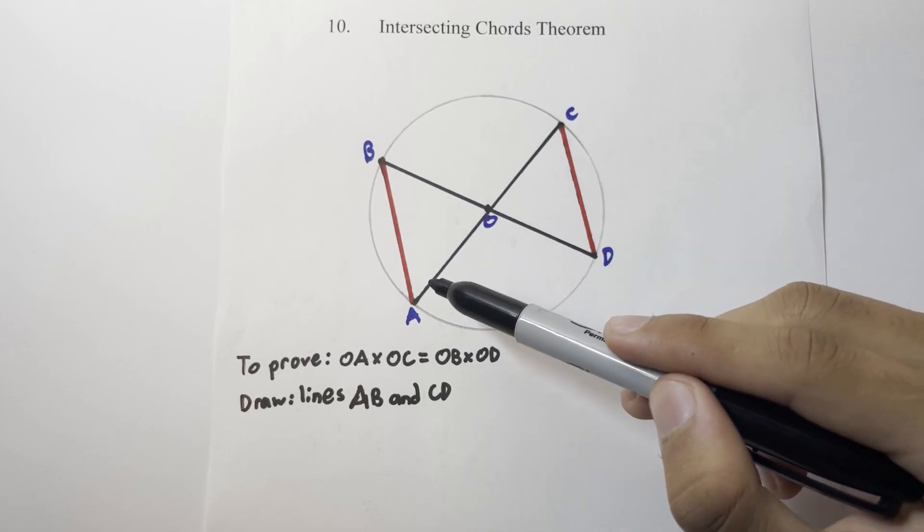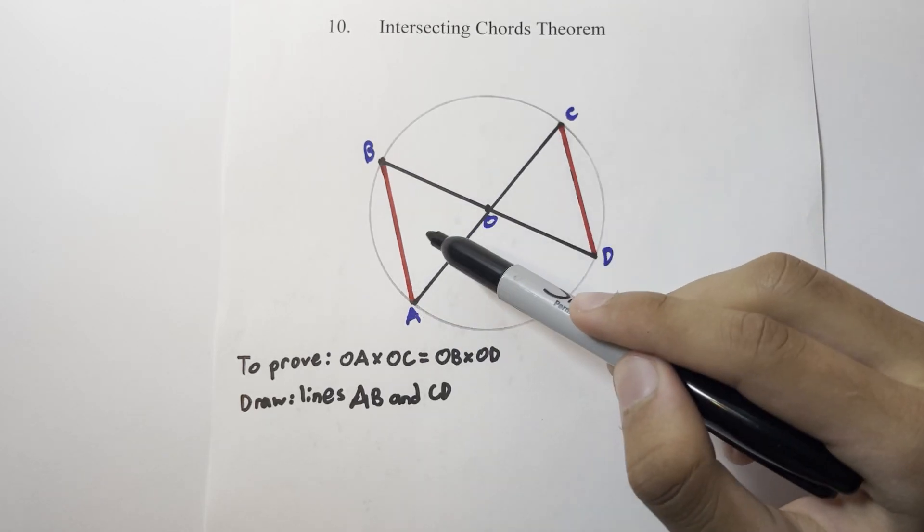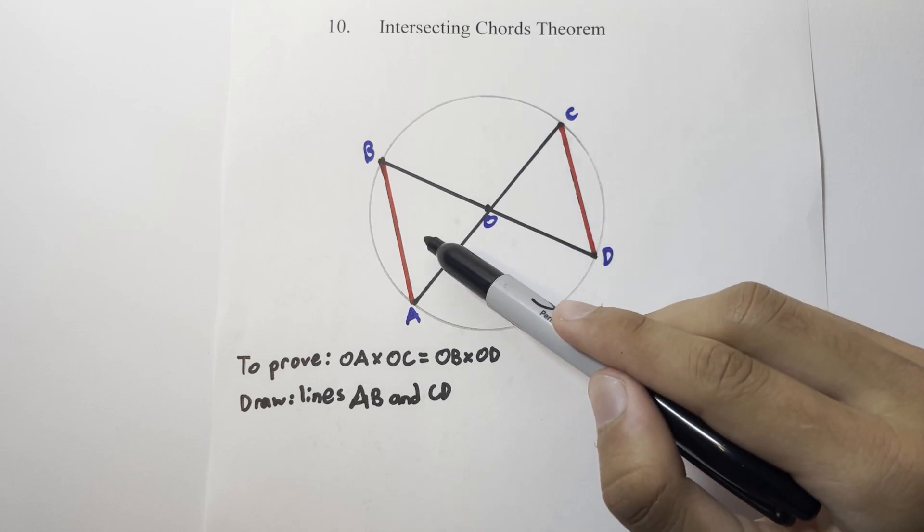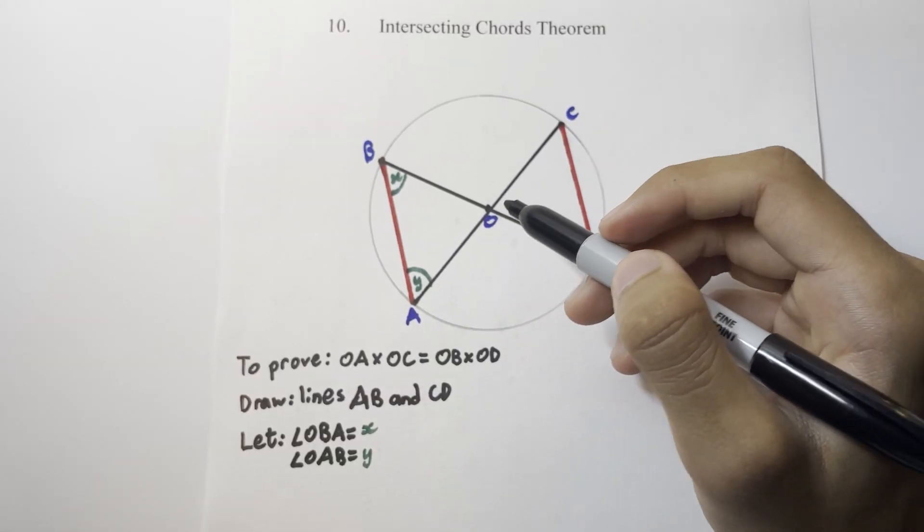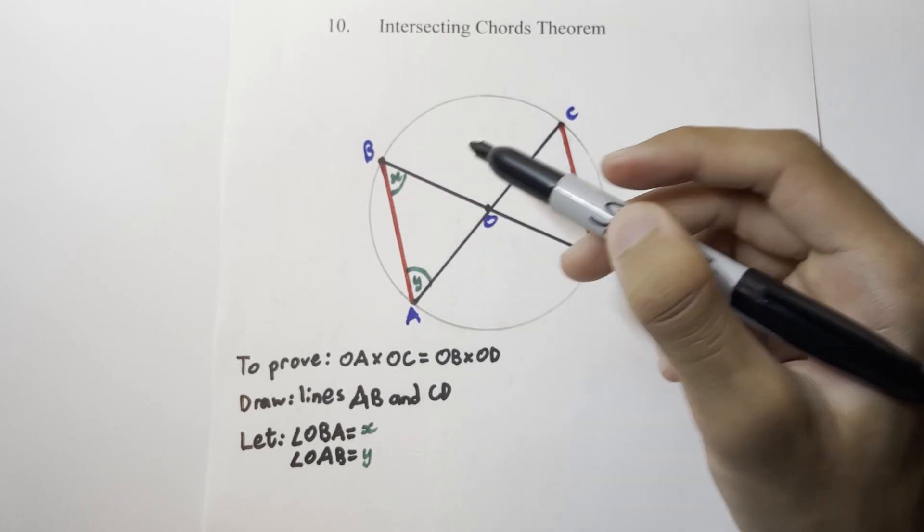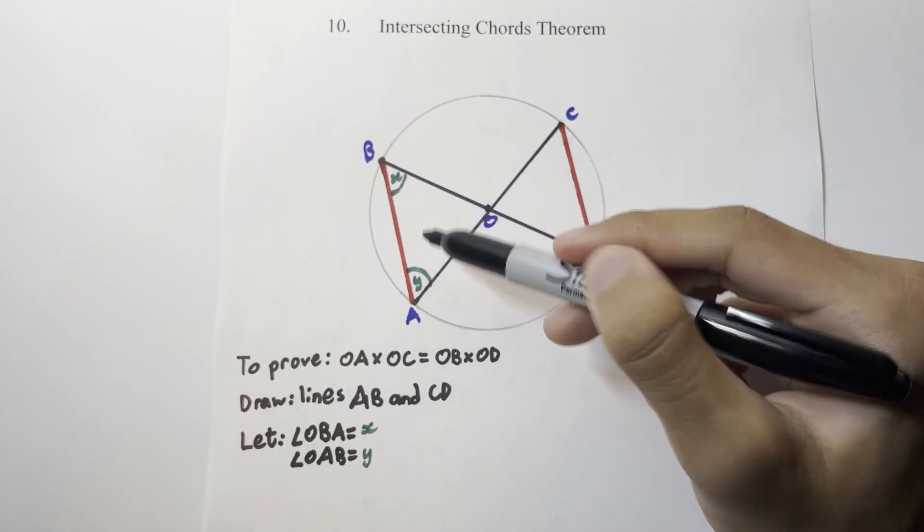Firstly, we draw two chords connecting AB and CD to form two triangles, triangle BAO and triangle COD. Next, we label two of our angles. Angle OBA is what we call x, and we call angle OAB y.